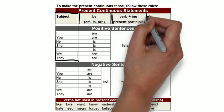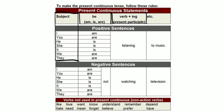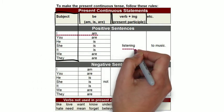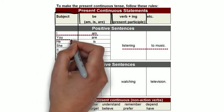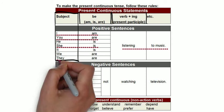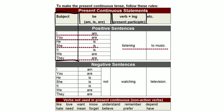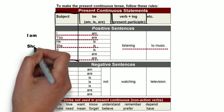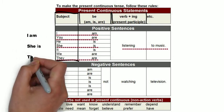We can make positive sentences like: I am listening to music, you are listening to music, she is listening to music, they are listening to music. Notice that the helping verb agrees with the subject, so we say I am, she is, they are.